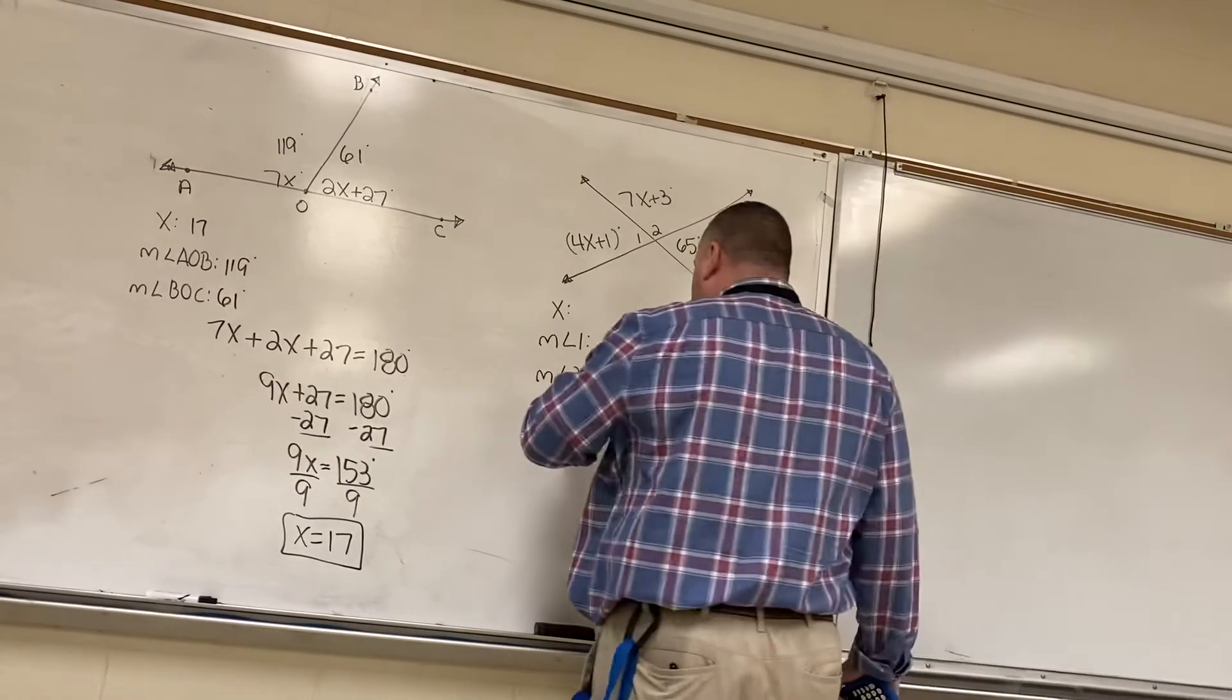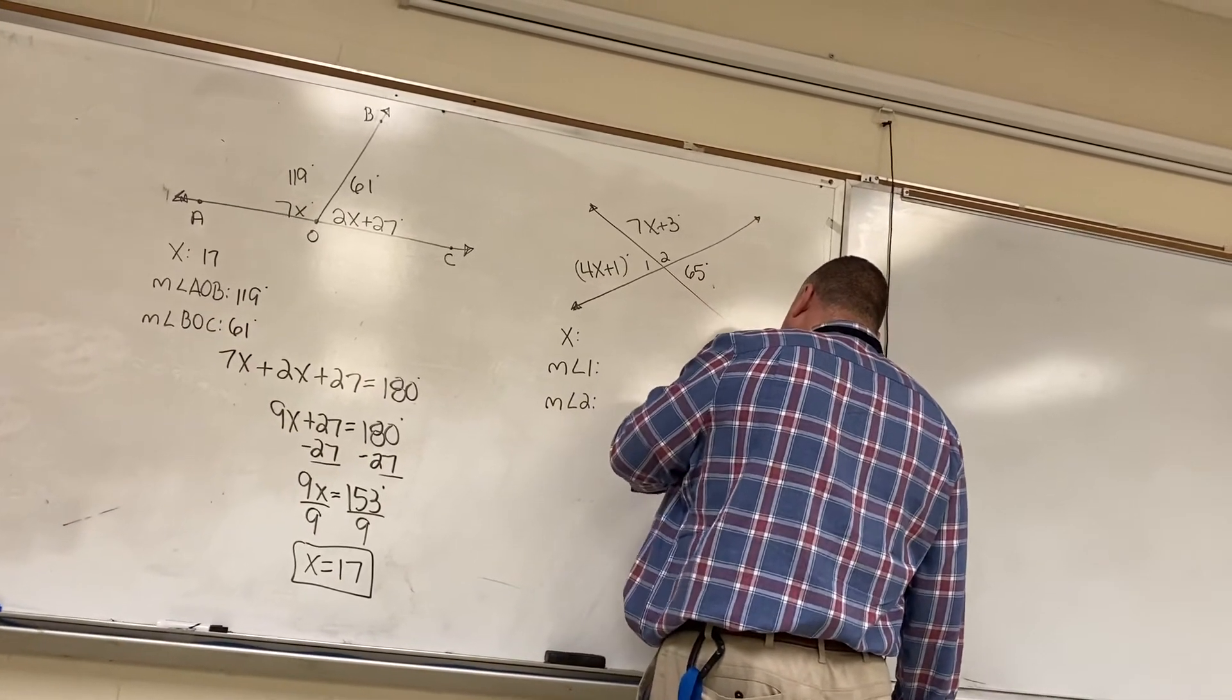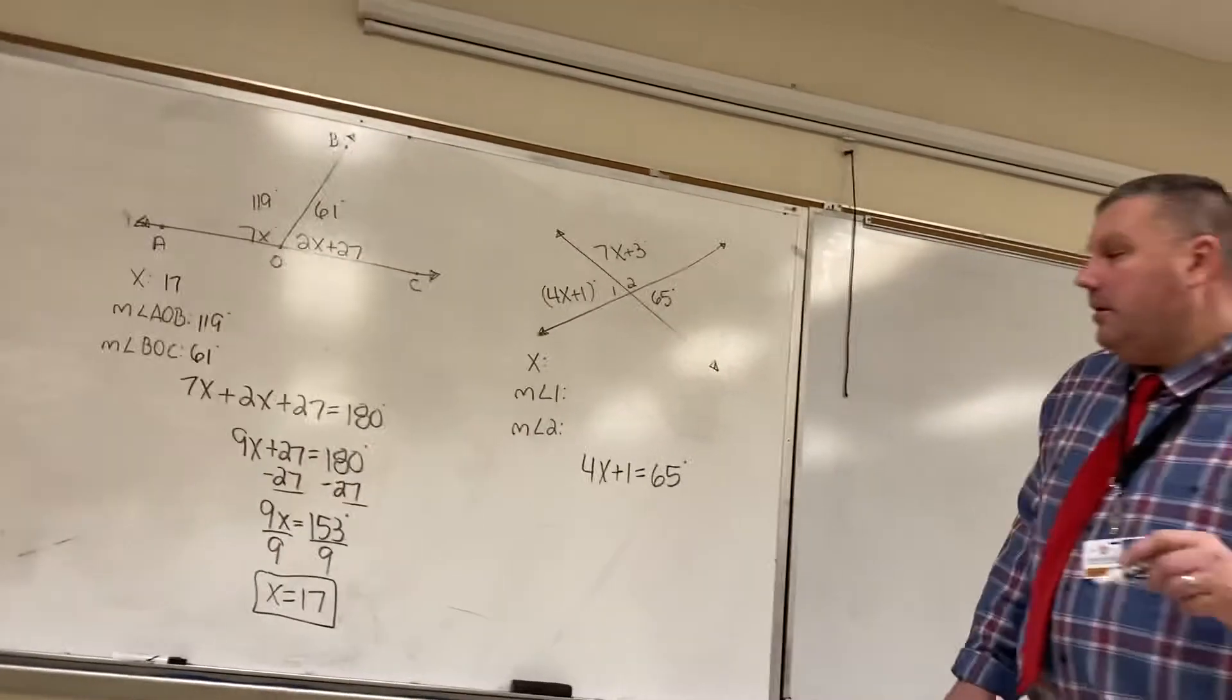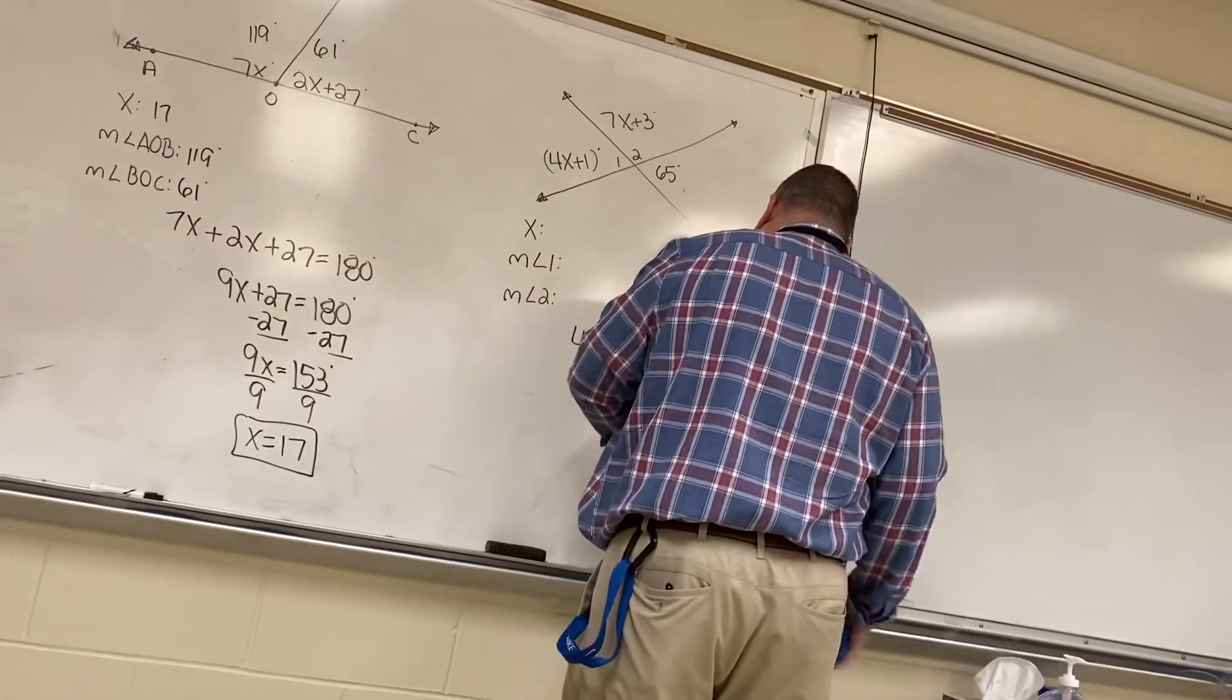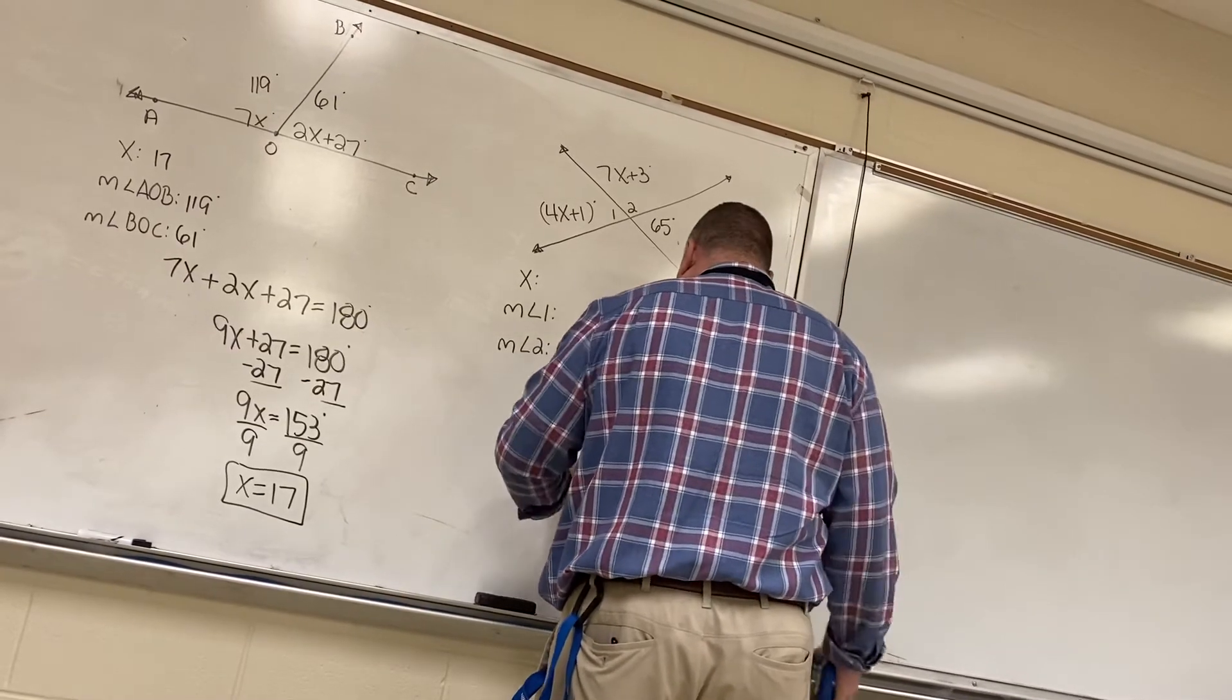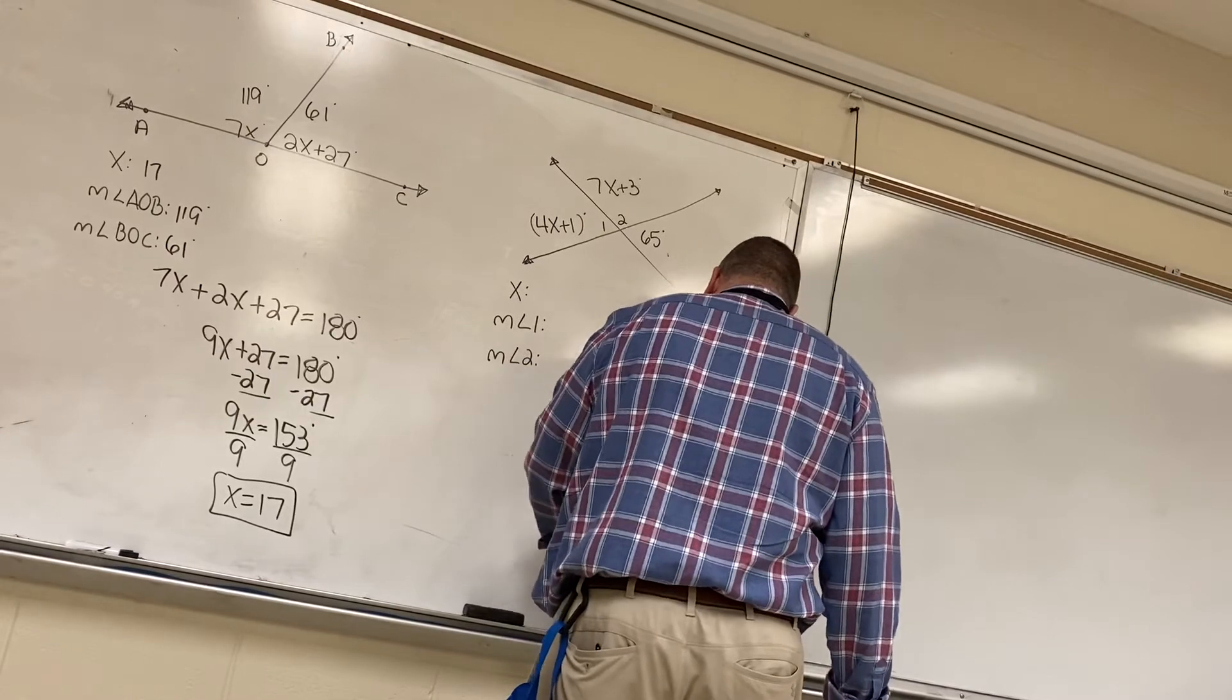I'm going to set 4x plus 1 equal to 65 degrees. Again, those are vertical angles. So, I'm going to subtract 1 from both sides. So, 4x is equal to 64. We're going to do 64 divided by 4. We have x is equal to 16.